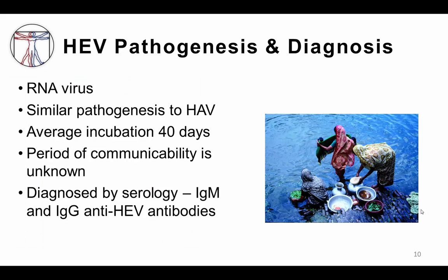Like hepatitis A, hepatitis E virus is an RNA virus with similar pathogenesis. Clinical features of hepatitis E are indistinguishable from acute hepatitis caused by any of the other hepatitis viruses. The incubation period is a bit longer than hepatitis A, ranging from 15 to 60 days with an average of about 40 days. This virus can be diagnosed by serology, including IgM in the acute phase of infection, and IgG which usually appears a few weeks later.